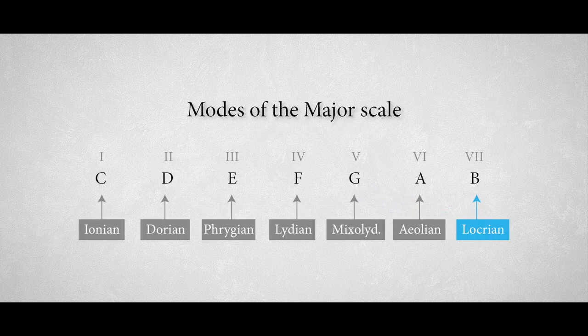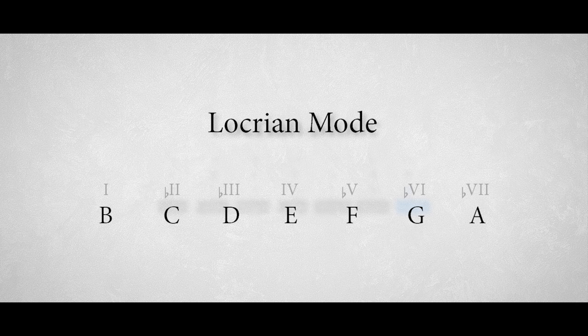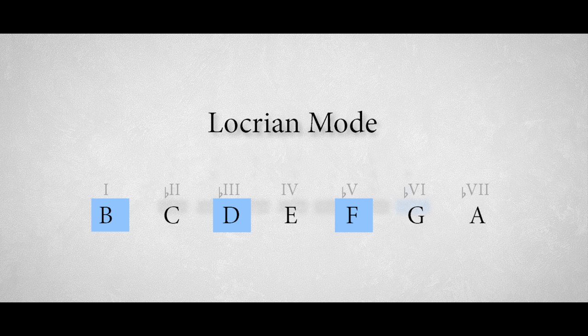The Locrian mode, the seventh mode of the major scale, is a mode with plenty of character. It's the only mode with a diminished triad on the first degree. This, and the flattened second degree, makes this mode pretty dissonant and strange sounding.